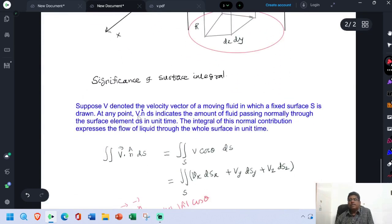If V be the velocity of the liquid, the integral of this normal contribution expresses the flow of liquid through the whole surface in unit time.